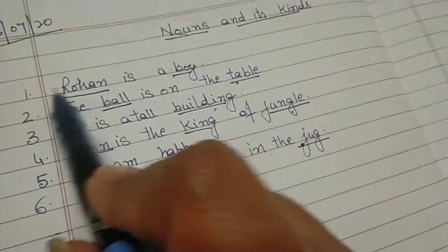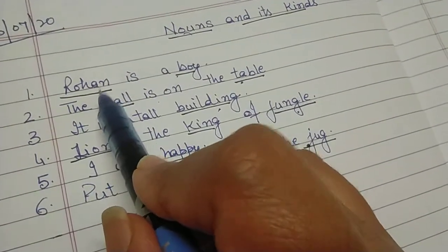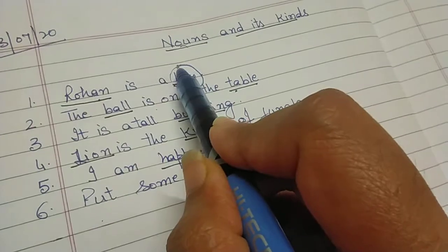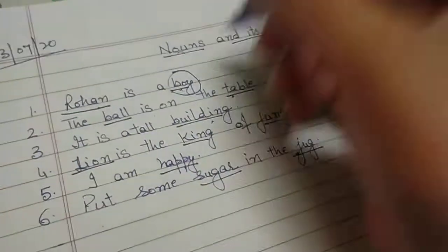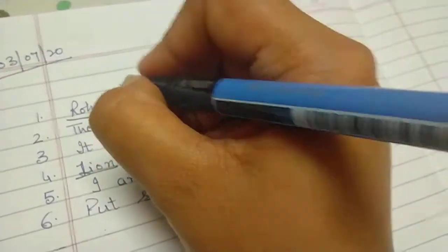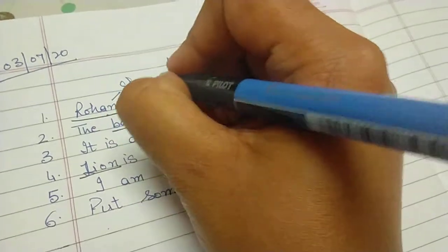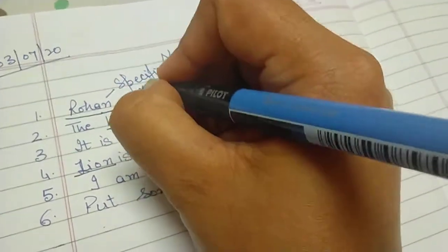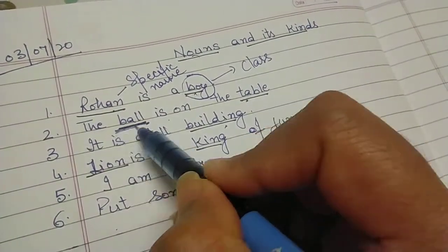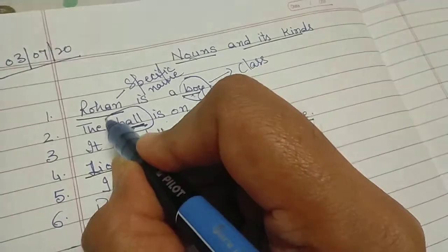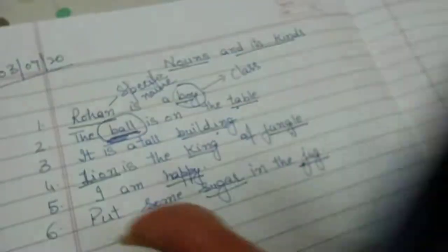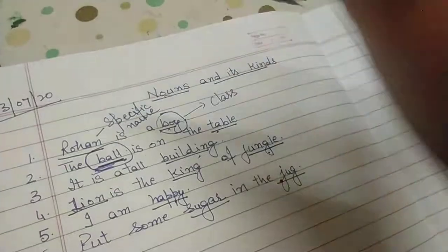Now, see these. Rohan is the name of a boy. Boy means a particular class — this boy represents a particular class. And Rohan is a specific name. Ball again names a particular thing, a particular class of things — a thing which is round and which bounces. That thing is called ball.